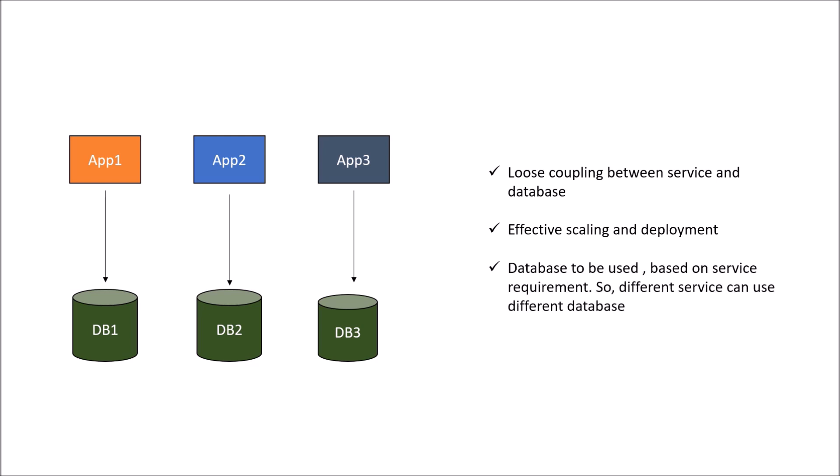The third advantage is that the database used is based on service requirement - different services can use different databases. If a service requires a NoSQL database, that microservice can use a NoSQL database. Any other microservice can use SQL or a graph database like Neo4j. The database choice depends upon the data the microservice is going to process and the kind of data storage needed.